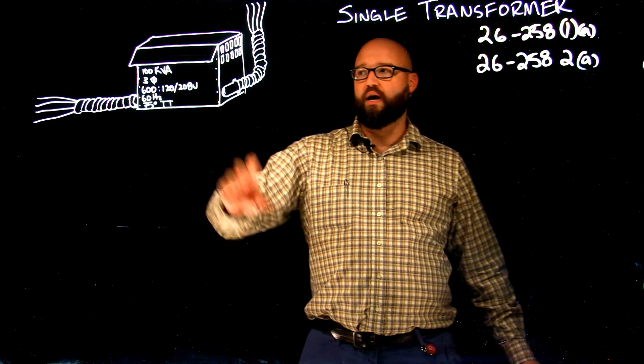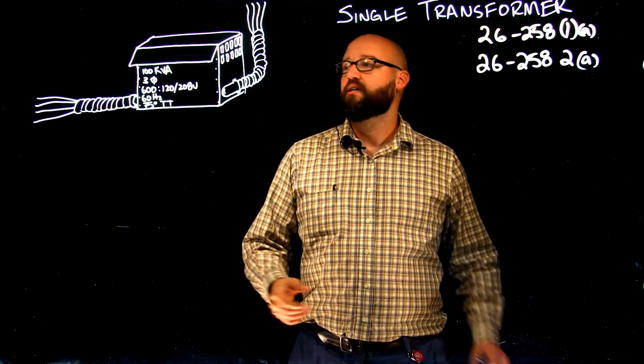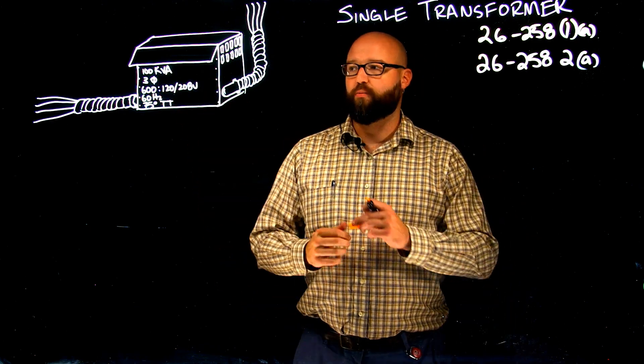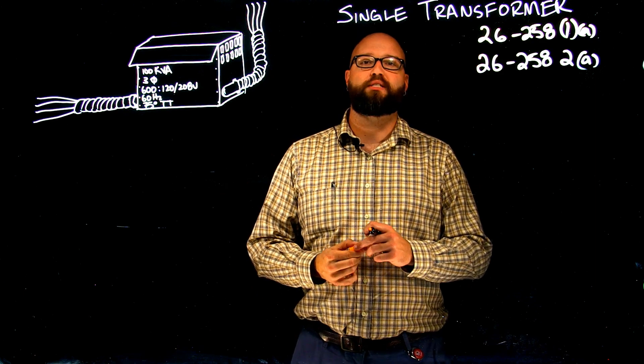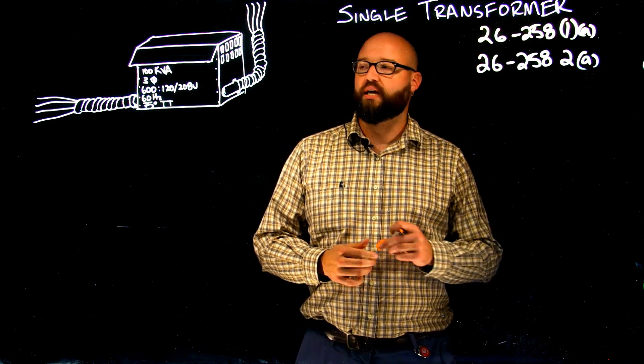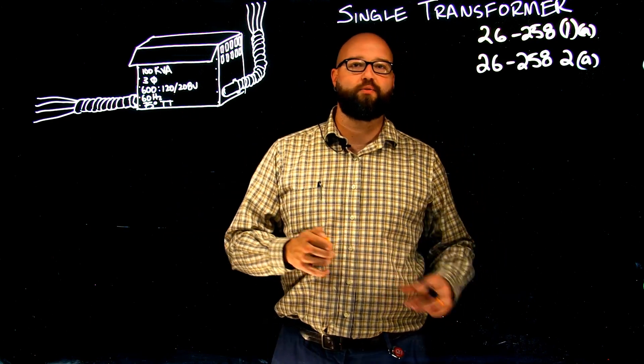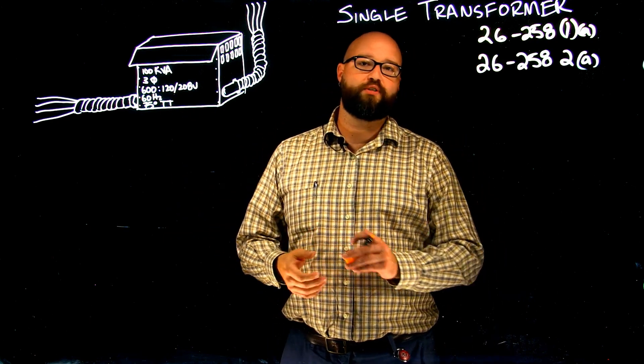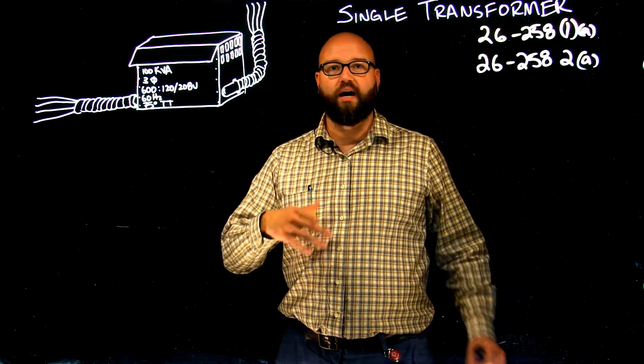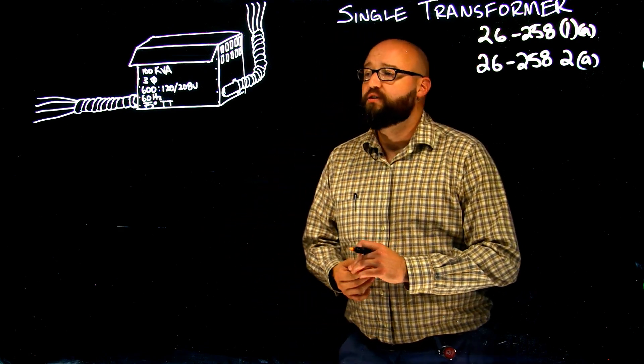What we have here, I have a 100 kVA transformer, three-phase transformer, 600 step down to 120/208 secondary voltage, 60 hertz, and we've got a 75 degree termination temperature, so we need to keep in mind rule 4006 when selecting conductors from table 2. So, we'll get started.